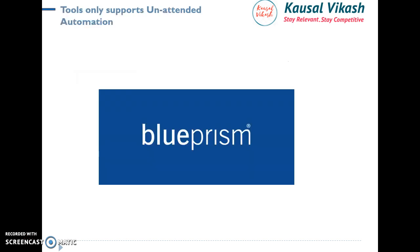Blue Prism is the only tool in the industry that only supports unattended automation. All other tools — UiPath, Automation Anywhere, and any other tool — support both Attended and Unattended automation together, because Blue Prism has a different philosophy and principle for scaling bots in the enterprise. Blue Prism fundamentally believes the only way to scale bots in an enterprise is through unattended bots. So just keep in mind: Blue Prism only supports unattended bots, while all other RPA tools support both.